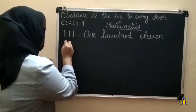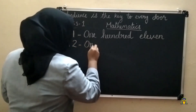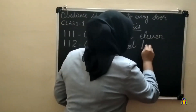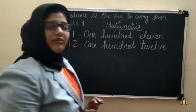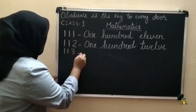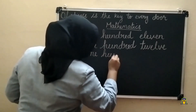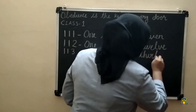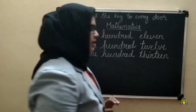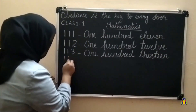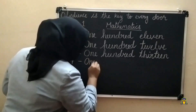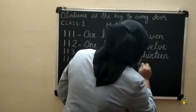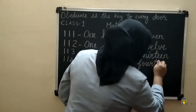After one hundred and eleven, one hundred and twelve: O-N-E H-U-N-D-R-E-D, T-W-E-L-V-E, twelve. Then one hundred and thirteen: O-N-E H-U-N-D-R-E-D, T-H-I-R-T-E-E-N, thirteen. Next, one hundred and fourteen: O-N-E H-U-N-D-R-E-D, F-O-U-R-T-E-E-N, fourteen.